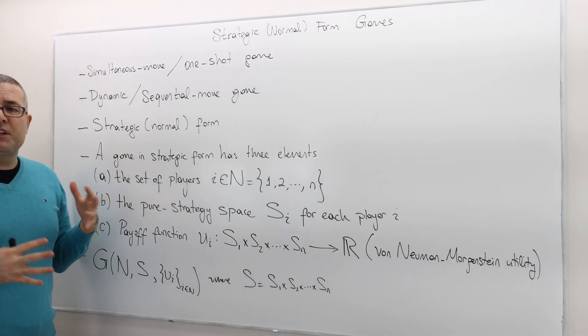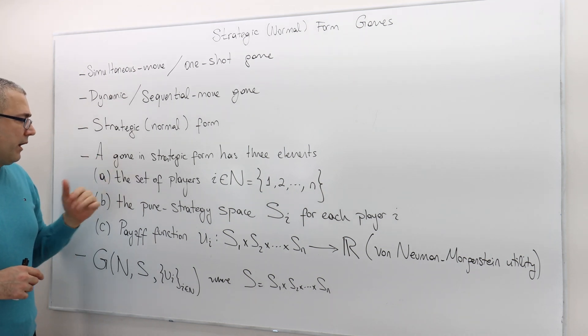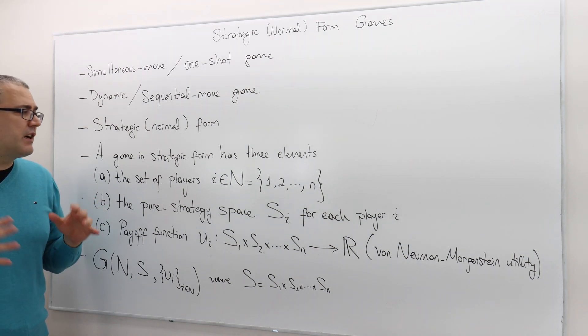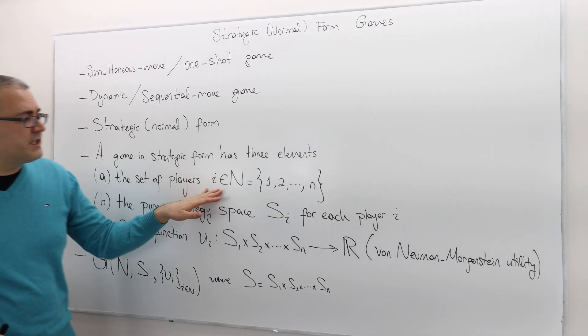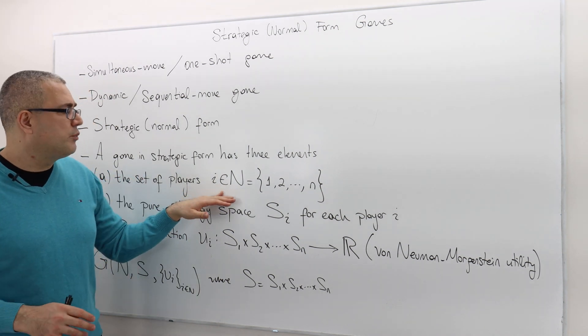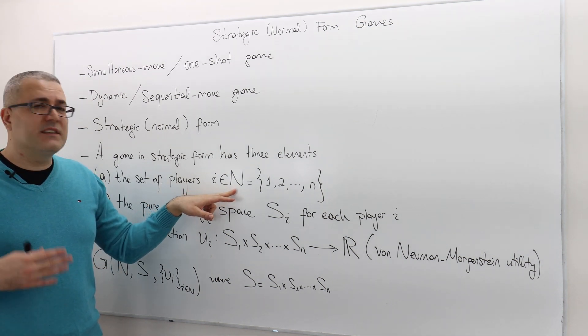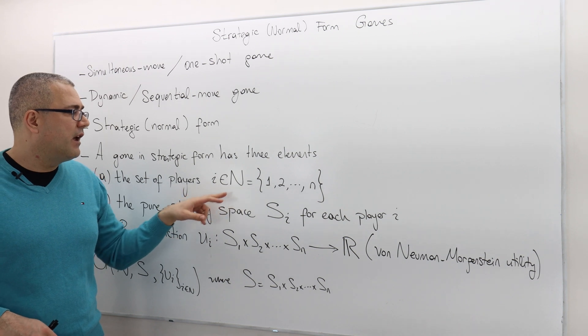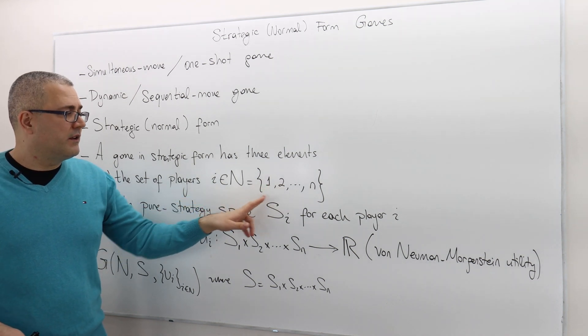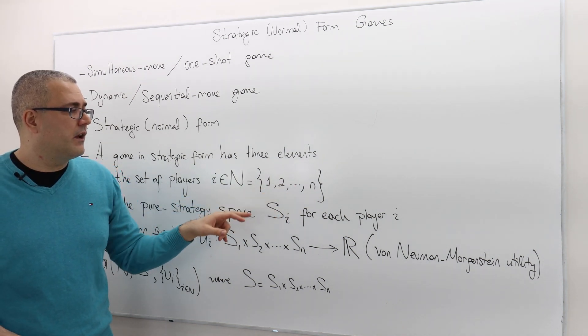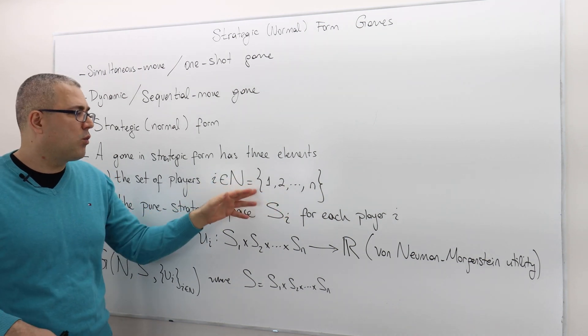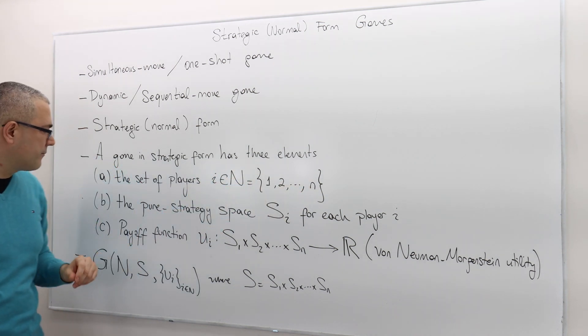A game in strategic form has three main ingredients. The first one is the set of players. So the description of the game should be clear about who the players are and how many players there are. We usually denote players by I and the set of players are denoted by N, capital N. And so the set one, two, three, up to N is basically the players, player one, player two, up to player N. So whenever we want to call a player, but not a specific name, it's just denoted by I.